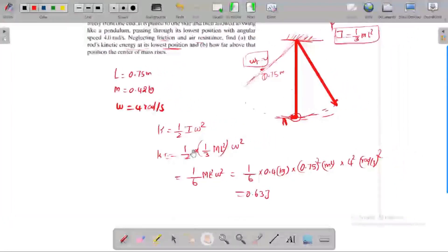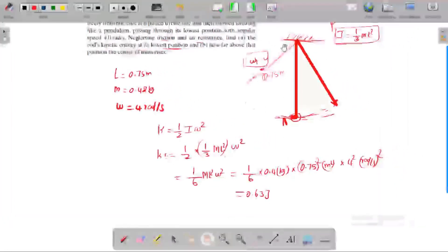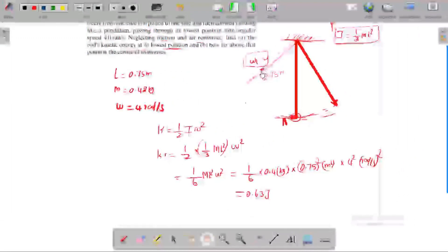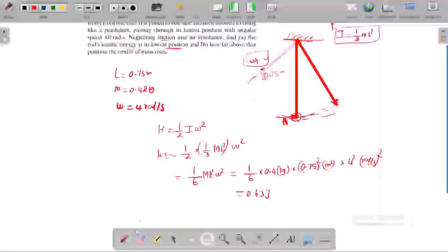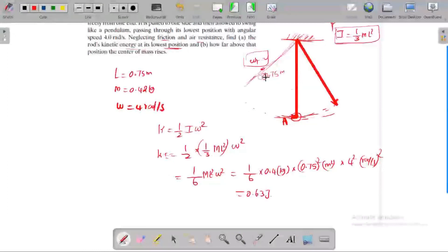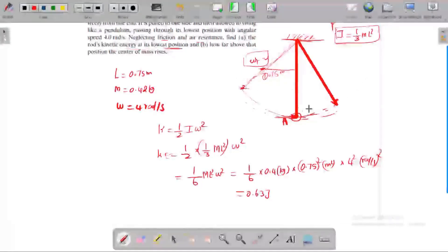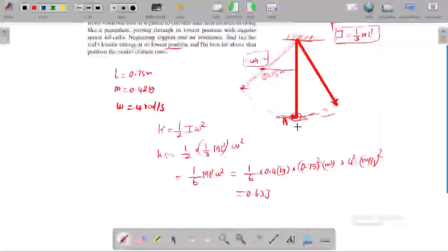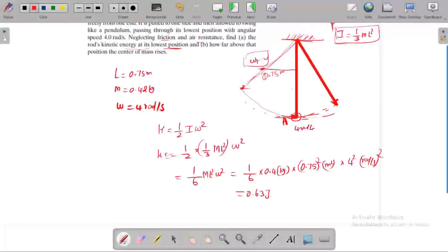Next we need to find how much distance its center of mass is moving. This is where the center of mass is moving, 4 radians per second. The final velocity is zero, the initial velocity is maximum.